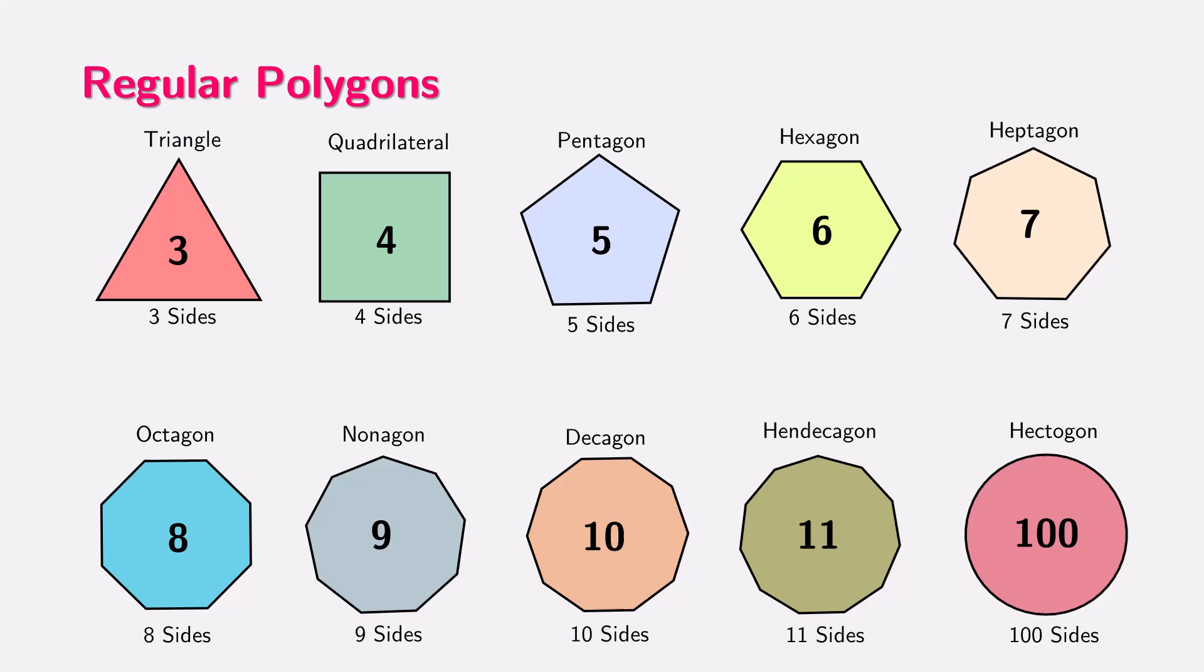Notice how the number of sides of these polygons increases by counting numbers: three, four, five, six, seven, and so on. This pattern continues, and you can keep adding sides infinitely. Here, for example, we jump to a polygon with 100 sides, called a hectagon. This shows a fascinating relationship between shapes and numbers. The number of sides of these regular polygons follows the sequence of counting numbers linking geometry and arithmetic together in a beautiful way.